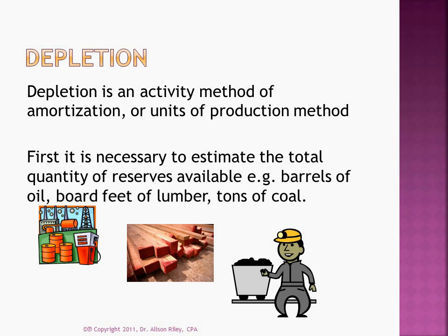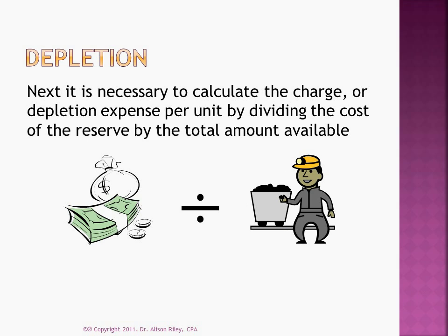Now let's move on to depletion. The costs of natural resources are amortized in a process known as depletion. Depletion is an activity or units-of-production method of amortization, meaning that more costs are allocated into depletion expense the more of the resource we extract. First, it's necessary to estimate the total quantity of reserves available — for example, barrels of oil in an oil field, board feet of lumber in a forest, or tons of coal in a mine. These are also accounting estimates. Next, calculate the depletion charge per unit by dividing the cost of the resource by the expected amount available for extraction. If the resource has a salvage value, deduct that from the historical cost first.